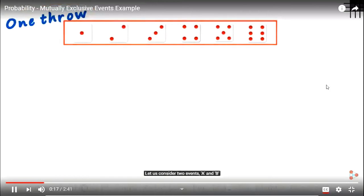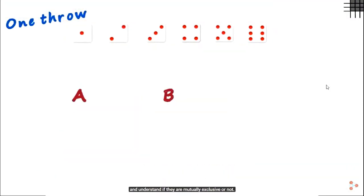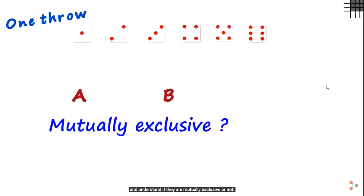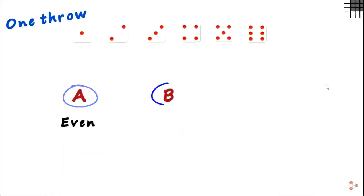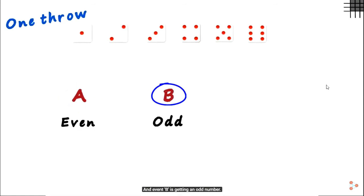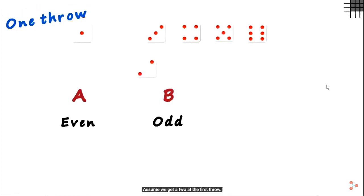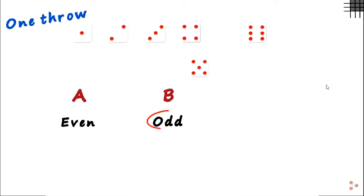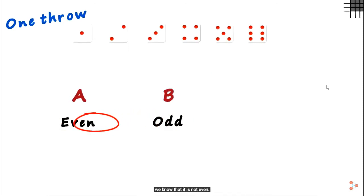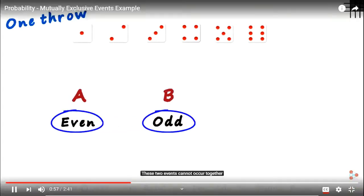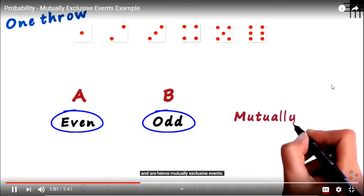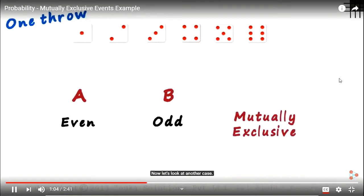Let us consider two events A and B and understand if they are mutually exclusive or not. Event A is getting an even number and event B is getting an odd number — we consider just one throw. If we get a two, it is even and not odd. If we get a five, it is odd and not even. These two events cannot occur together and are hence mutually exclusive.